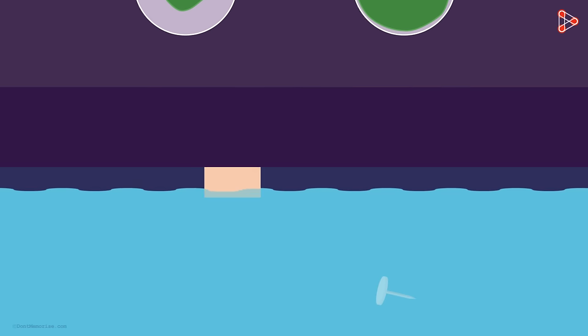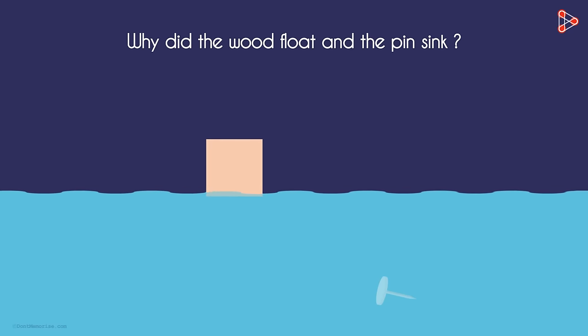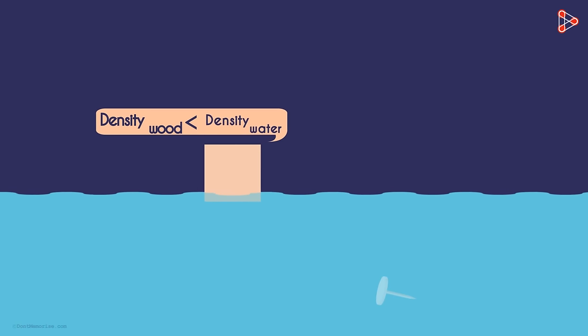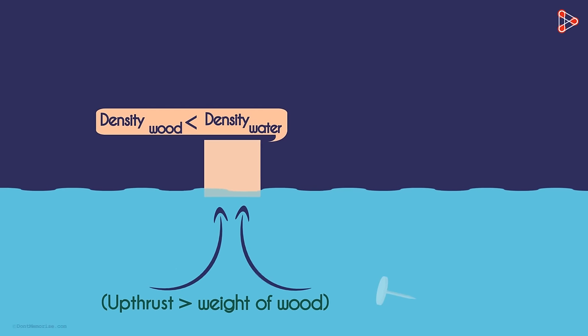Coming back to our example, why did the wood float and the pin sink? The wood floated on water because the density of the wood is lesser than the density of water. Hence the up thrust of water on the wood is greater than the weight of the wood. Hence it floated.